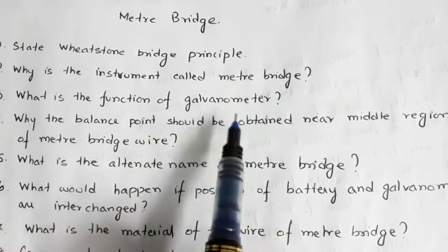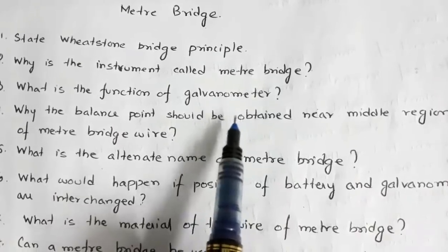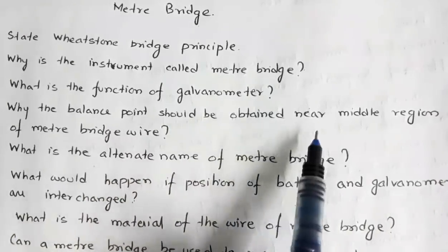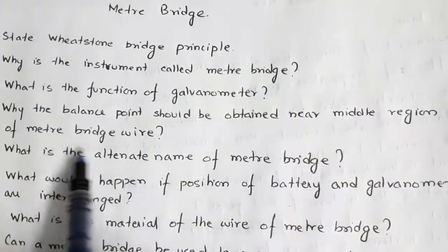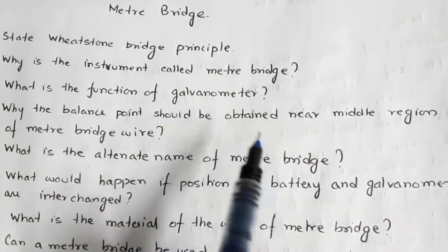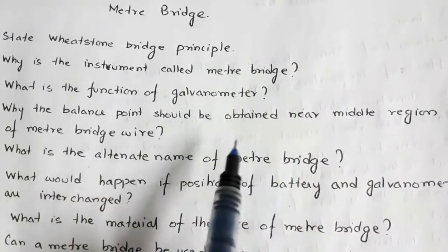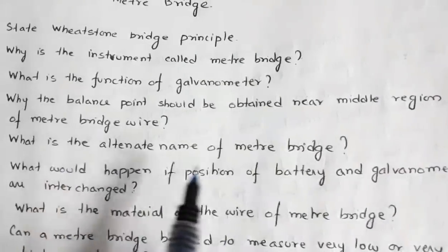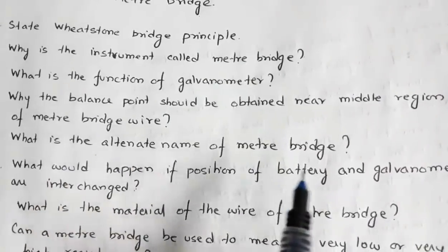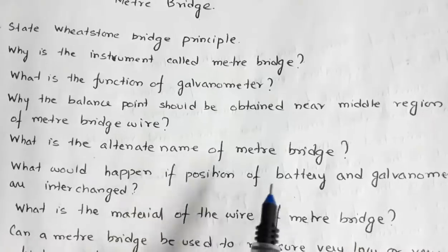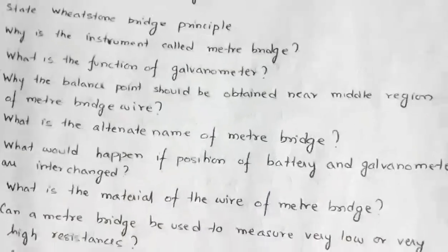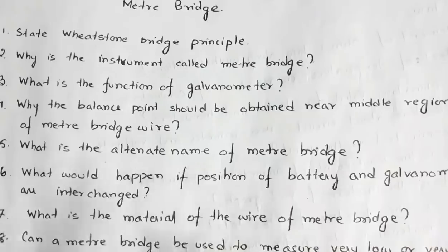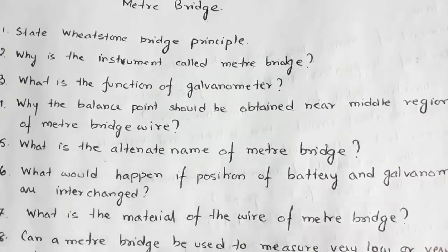What is the function of the galvanometer? The function of the galvanometer is to detect the direction of current. Why should the balance point be obtained near the middle region in the meter bridge wire? Because in the middle region the meter bridge is most sensitive. What is the alternate name of the meter bridge? It is called a slide wire bridge, because we slide a jockey over the wire to measure the reading.